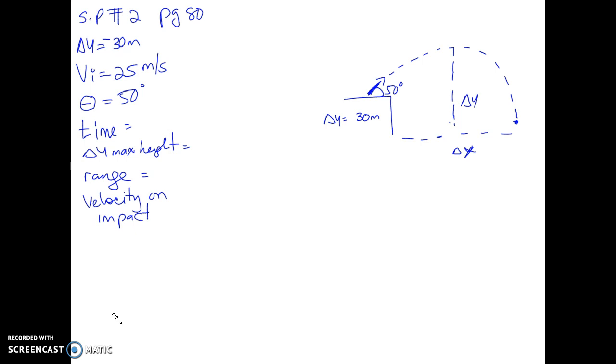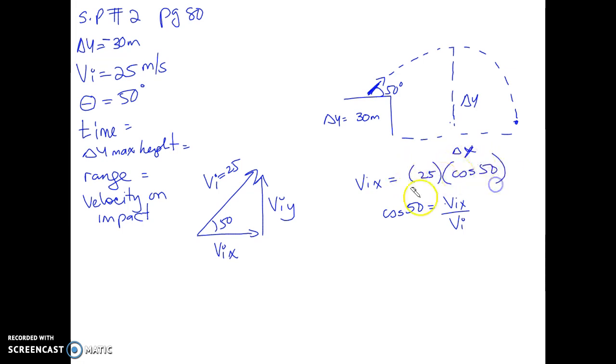First things first, we're going to start with vi divided into its component parts, vix and viy. This is 50 degrees, this is 25. So vix of course, as we know, comes from cos x which is cos 50, which equals to adjacent which is vix over vi. So vix equals to 25 times cos of 50.